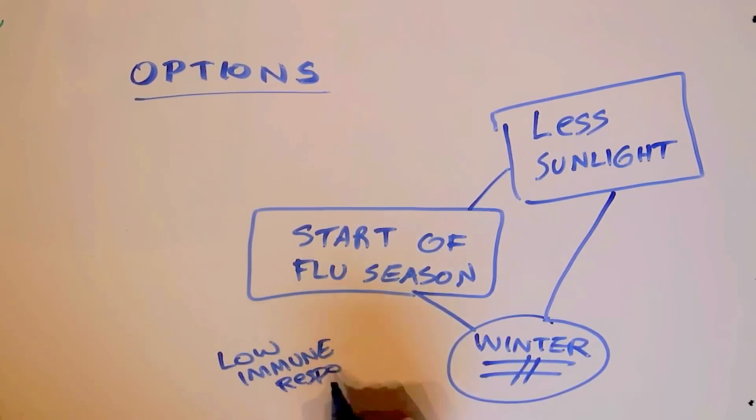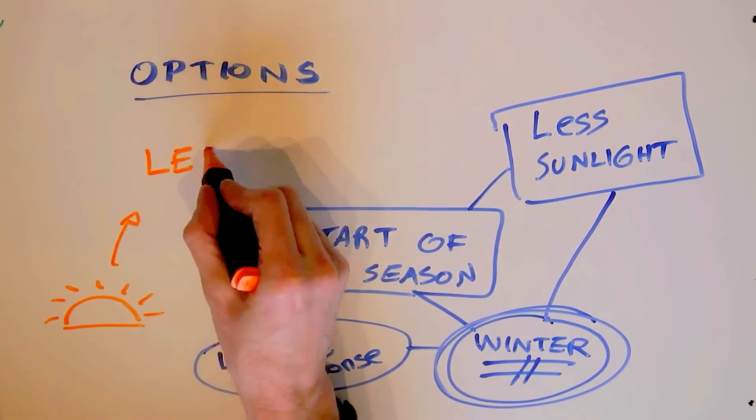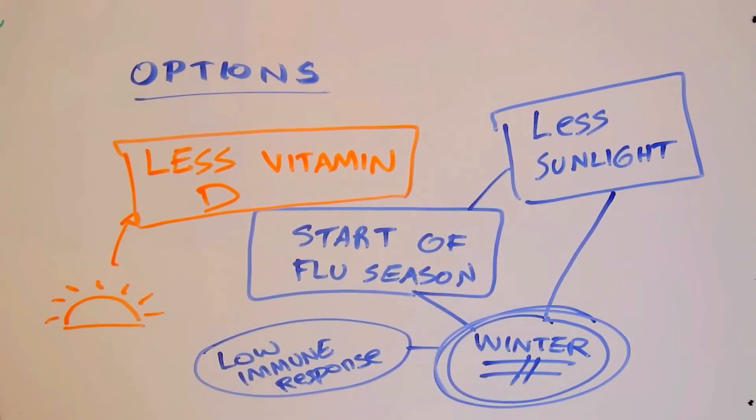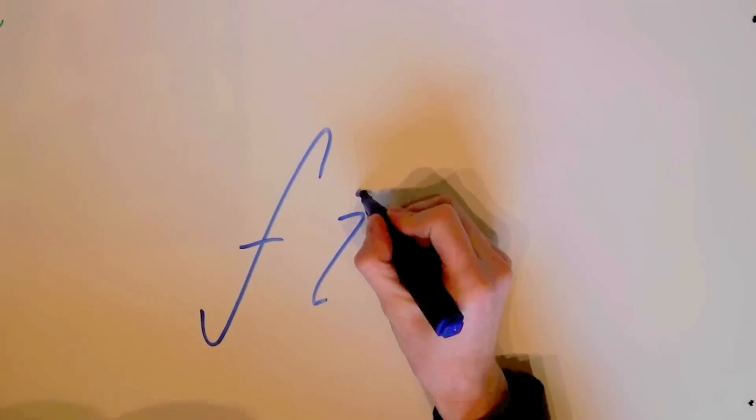And especially in the winter. It's interesting, a little side note about winter. You think about it. There's less sunlight in the winter. There's lower immune response. And it's the start of flu season. And these are related. In fact, they found that vitamin D has an effect on our immune system as well. Vitamin D is a really good thing.